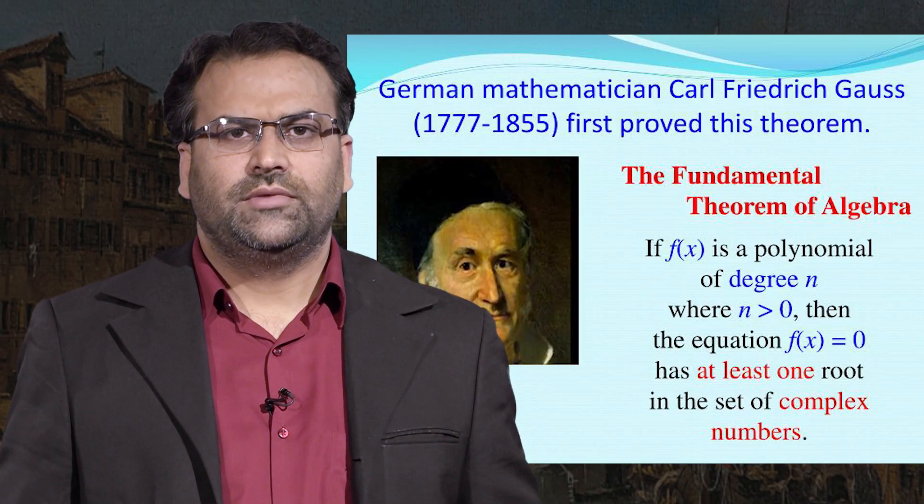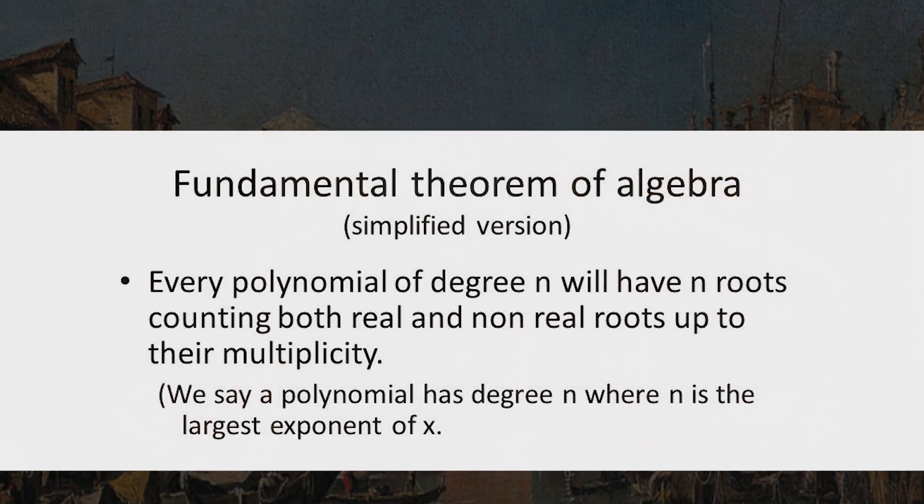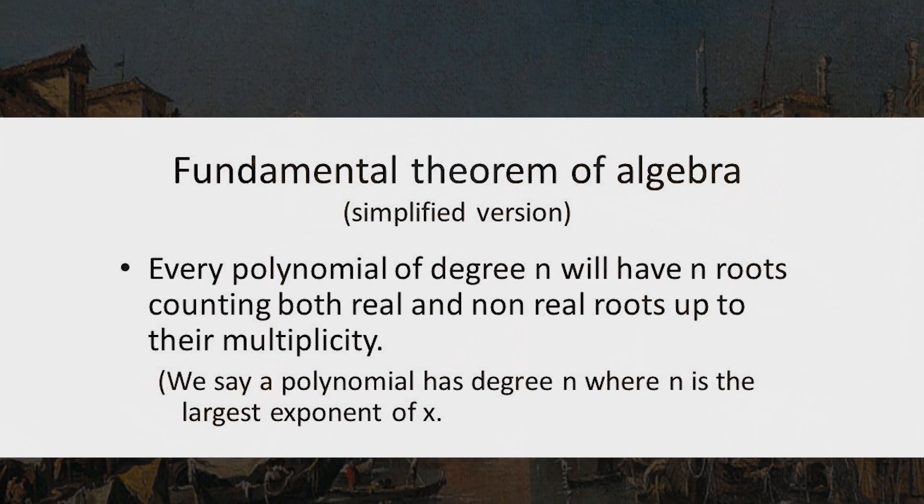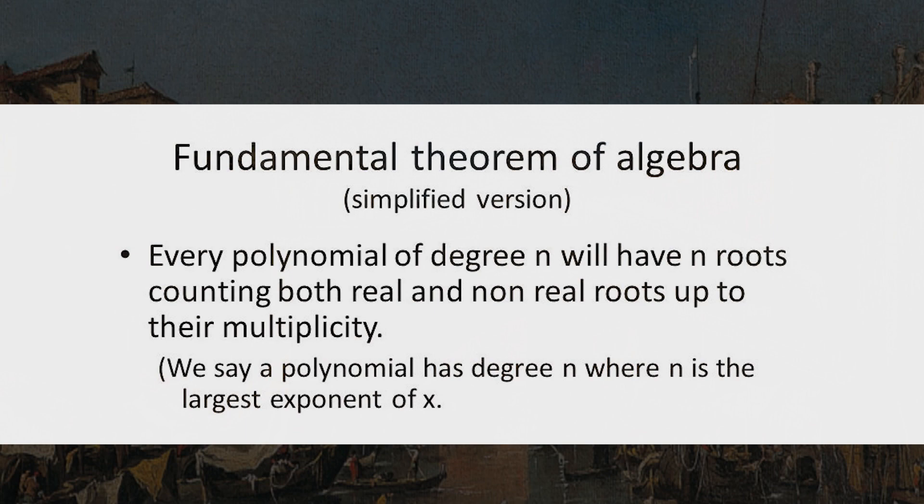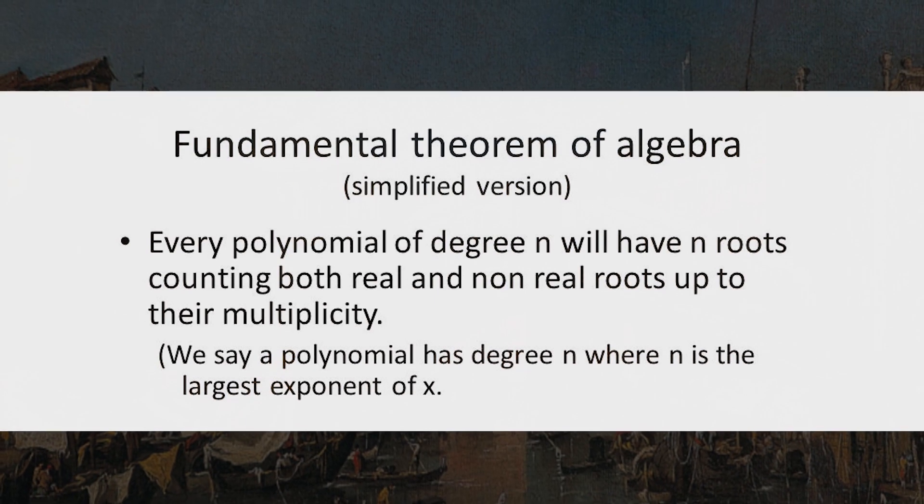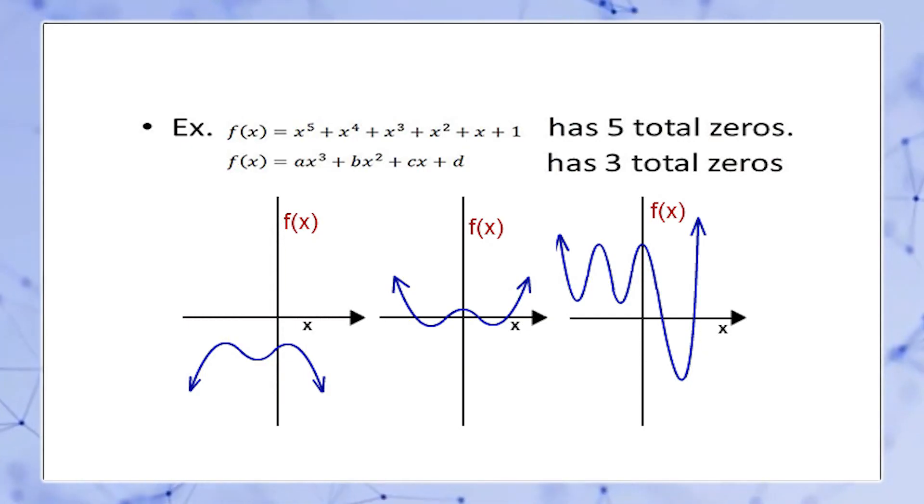Using the algebra of these complex numbers, a great German mathematician called Friedrich Gauss proved the fundamental theorem of algebra which simply says that an equation of degree n will have n roots. For example, a fifth degree equation has five roots and third degree equation has three roots.